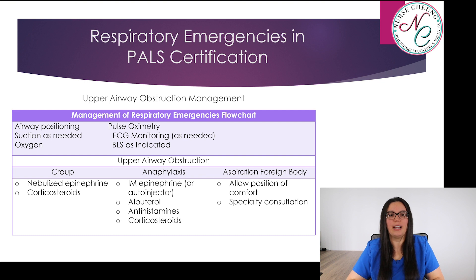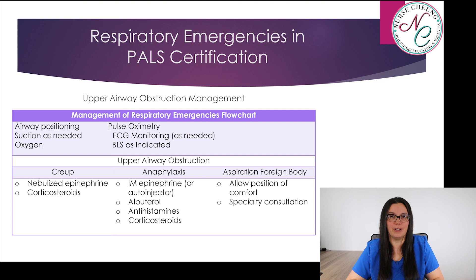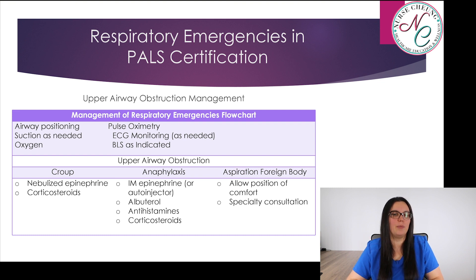With upper airway obstructions from croup, we want to give nebulized epinephrine and corticosteroids. For anaphylaxis, we're going to give IM epinephrine or an autoinjector, albuterol, antihistamines, and corticosteroids. With aspiration of a foreign body, we want to allow a position of comfort and seek a specialty consultation depending on how large the foreign body is.